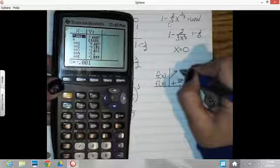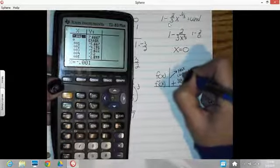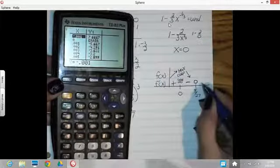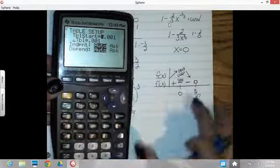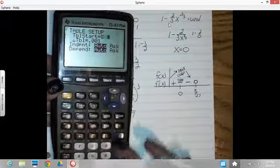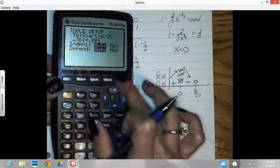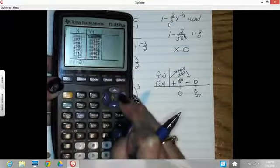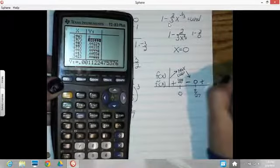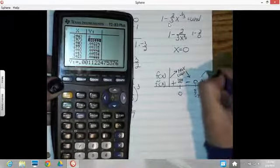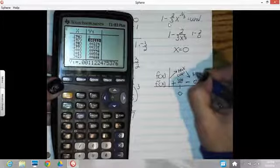That's a cusp. So I've got a maximum cusp here. And then for the 8/27, I'll go back to my table set and start it at 8/27. I better see a 0 there — and I do. After it, my y-values are all positive. So that means the graph went down then went back up. This makes this a minimum.